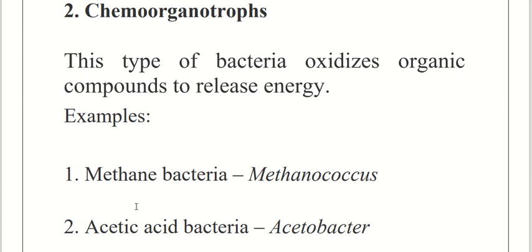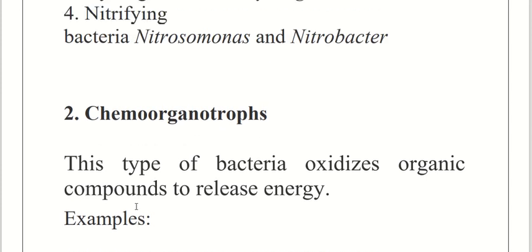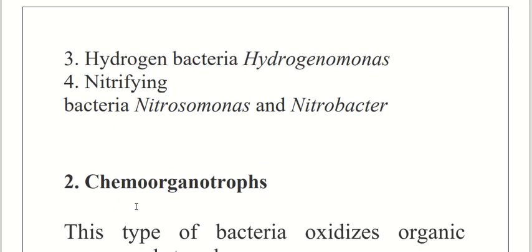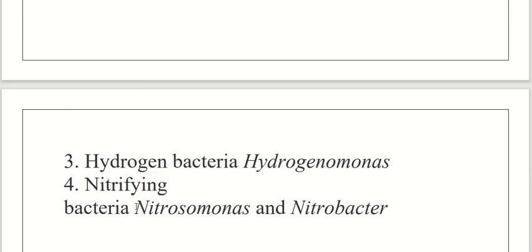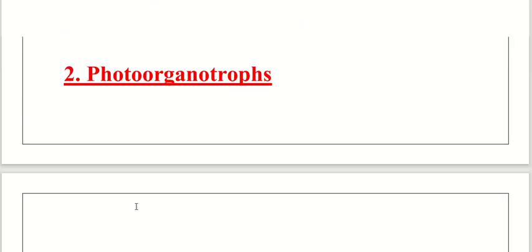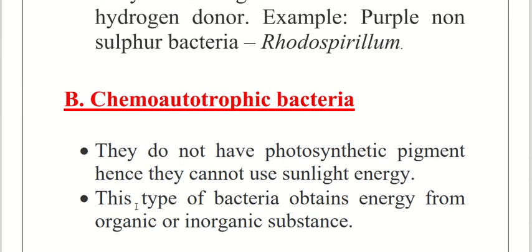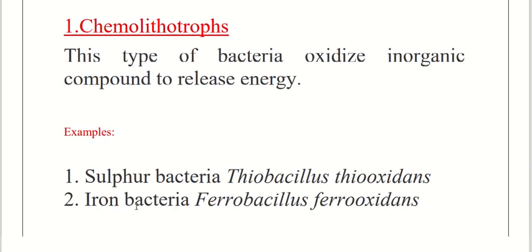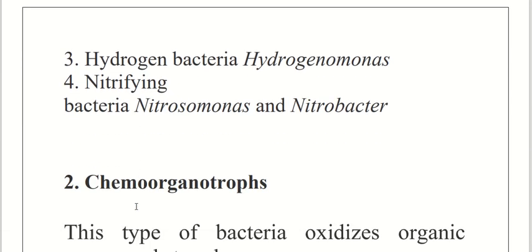To summarize bacterial nutrition: the main classification is autotrophic bacteria and heterotrophic bacteria. Under autotrophs, we have photo-autotrophs (divided into photolithotrophs and photo-organotrophs) and chemo-autotrophs (divided into chemo-lithotrophs and chemo-organotrophs). This flowchart model covers the full classification.